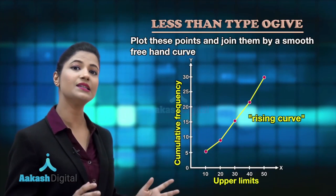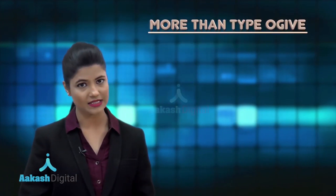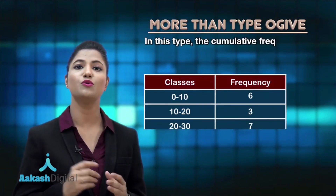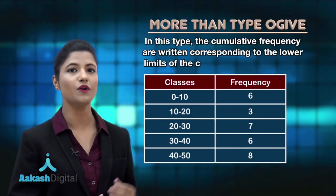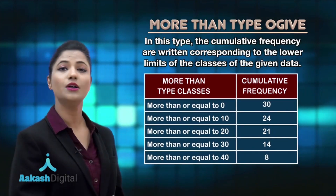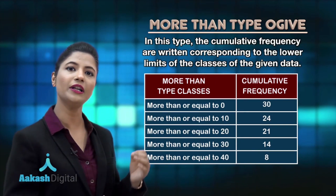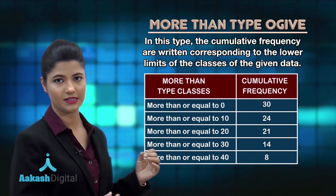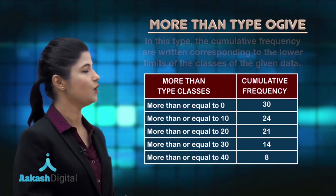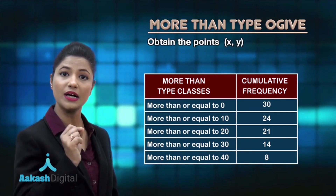Next we have the more than type ogive. For the more than type ogive, you need to construct the frequency distribution table having classes of more than or equal to type. In this case, you consider the cumulative frequency of a class corresponding to its lower limits, and you make these classes of more than or equal to type.